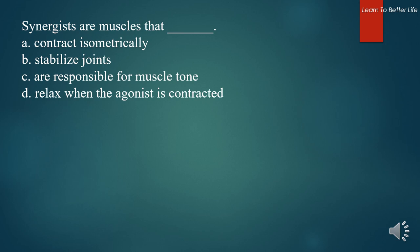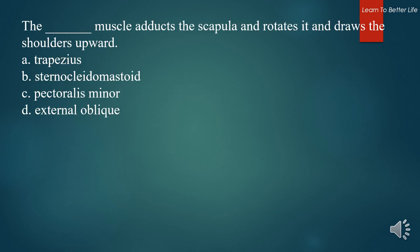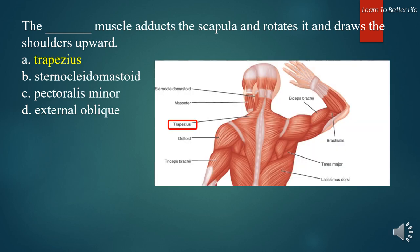Synergists are muscles that. A. Contract isometrically. B. Stabilize joints. C. Are responsible for muscle tone. D. Relax when the agonist is contracted. The answer is B. Stabilize joints. What muscle adducts the scapula and rotates it and draws the shoulders upward? A. Trapezius. B. Sternocleidomastoid. C. Pectoralis minor. D. External oblique. The answer is A. Trapezius.